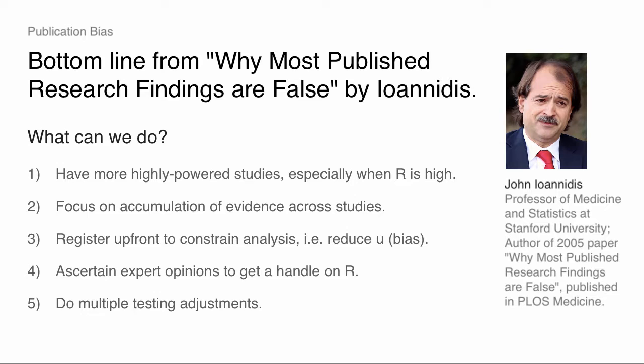If you're forced ex ante in a pre-analysis plan — here are a couple approaches I think are sensible, and you have to show those — it's going to tie your hands to some extent, making it a little harder to data mine or deviate in some radical way. Point four is ascertaining expert opinions, which will help us get a handle on R. And finally, point five: we should do multiple testing adjustments. If you have 10 hypotheses, you adjust your p-values for the fact that you've run 10 tests. We very rarely do it in any social science field, but it would raise the bar and hopefully weed out some false positives.